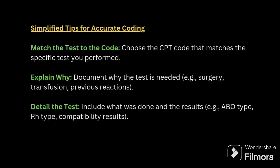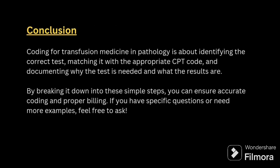Simplified tips for accurate coding: match the test to the code — choose a CPT code that matches the specific test performed. Document why the test is needed; for example, surgery, transfusion, or previous reaction. Also record the details of the test, whether it is ABO type or RH type.